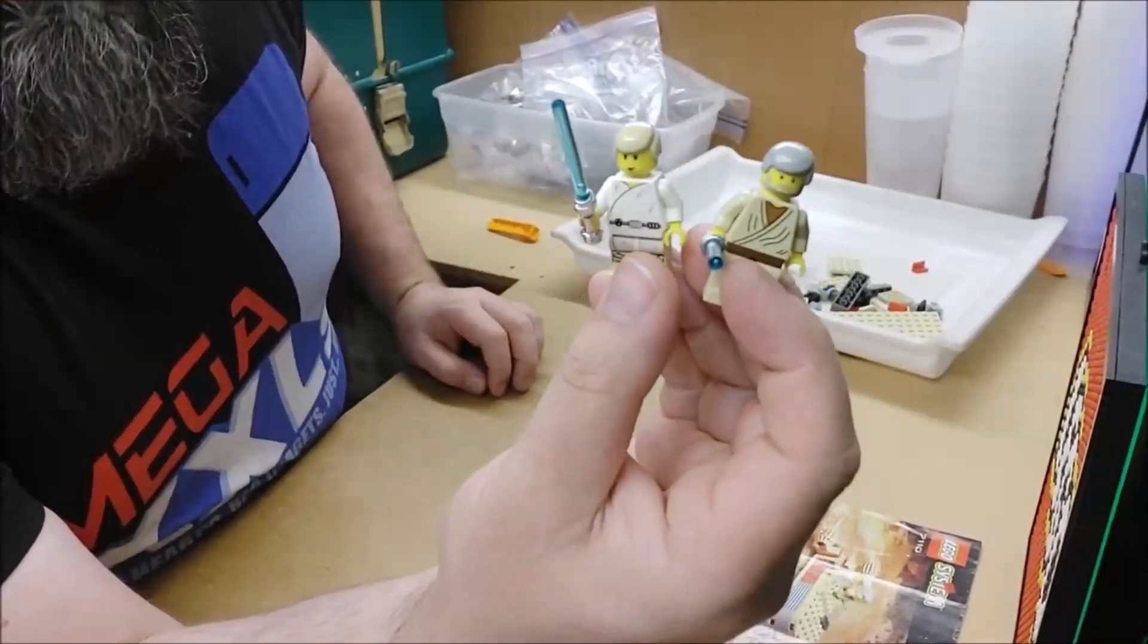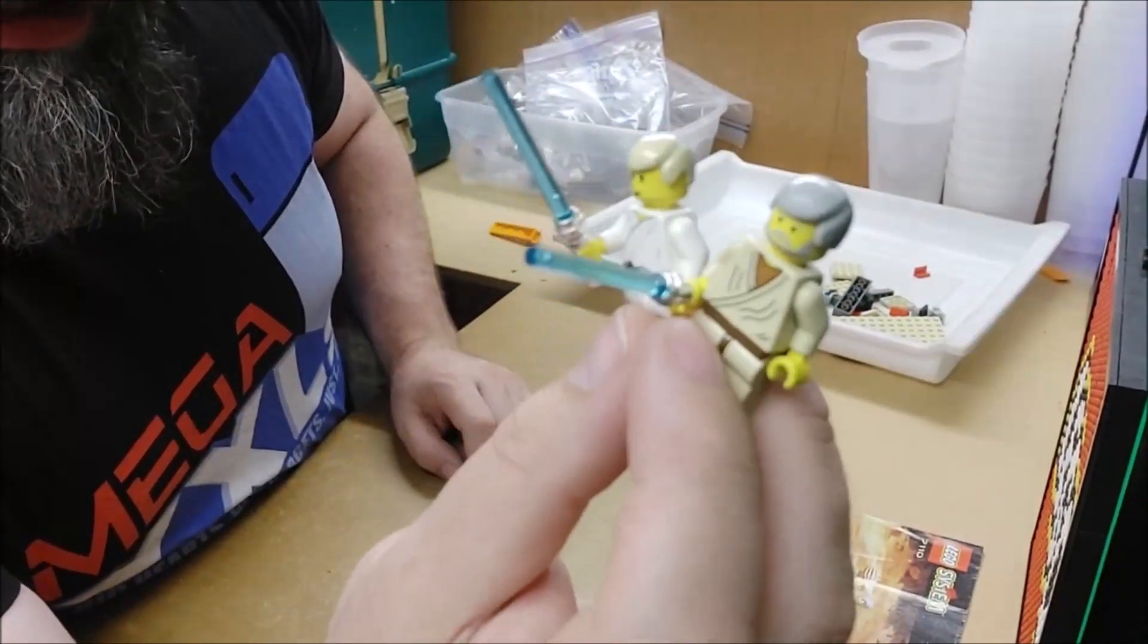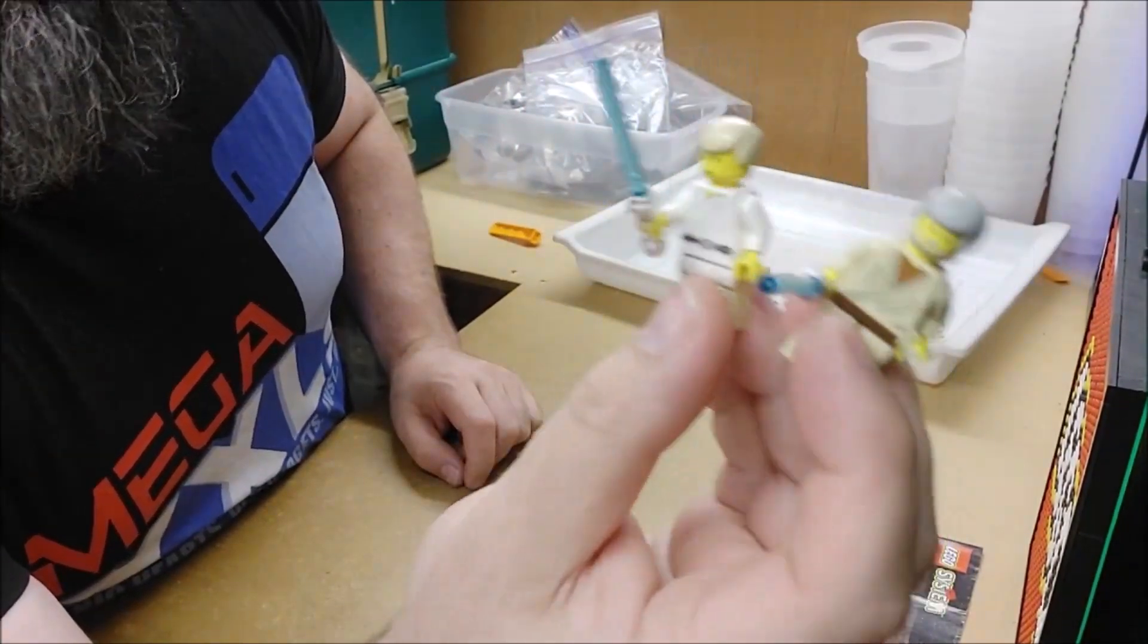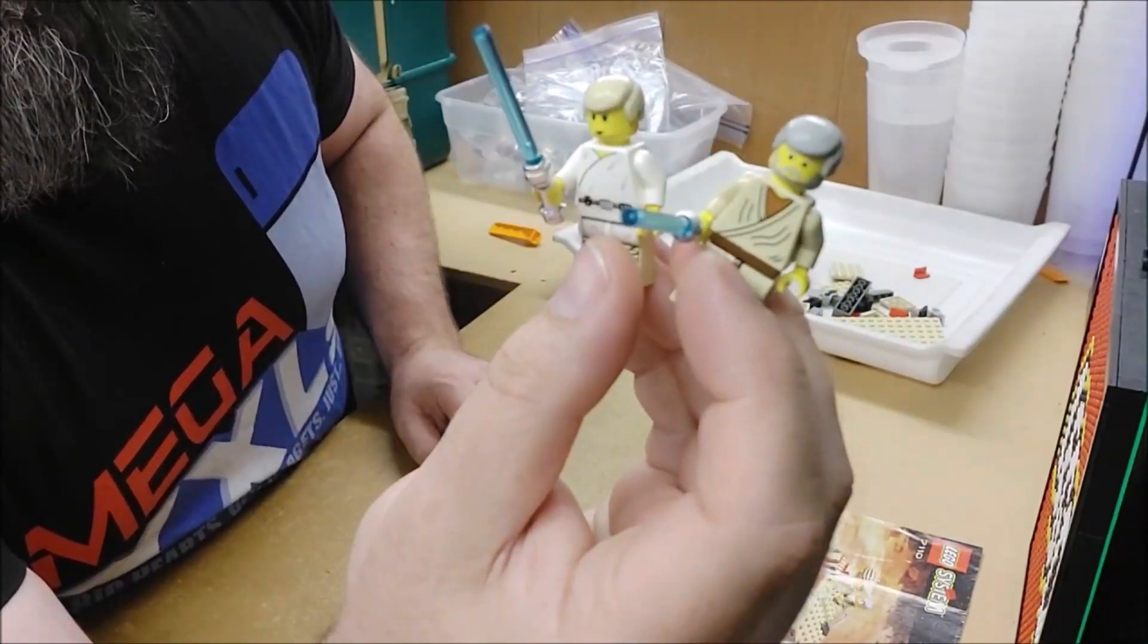For minifigs, we have Obi-Wan Kenobi and Luke Skywalker. This was back when they still gave them yellow heads and hands, before they switched to the flesh tone for whatever reason. And we've got their lightsabers. Lovely.